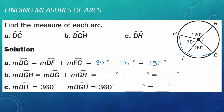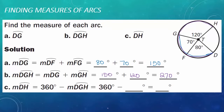Next, I need to find the measure of arc DGH. That's a major arc that's going from D to G, and then all the way through to H. We already know the measure of DG — that's 150 degrees — and then G to H is 120 degrees. If I add 150 and 120 degrees, I get that that arc measure is 270 degrees.